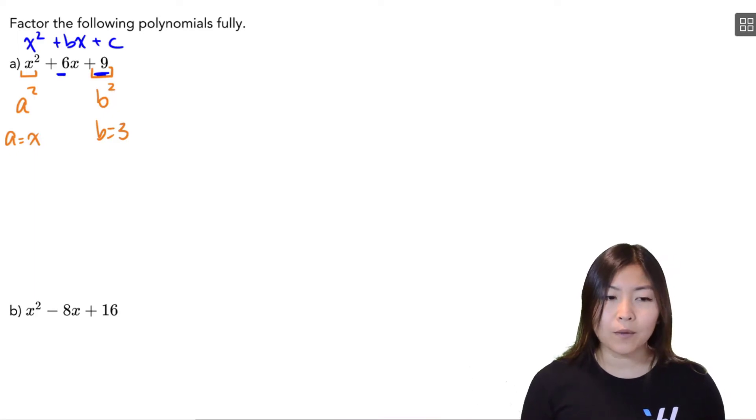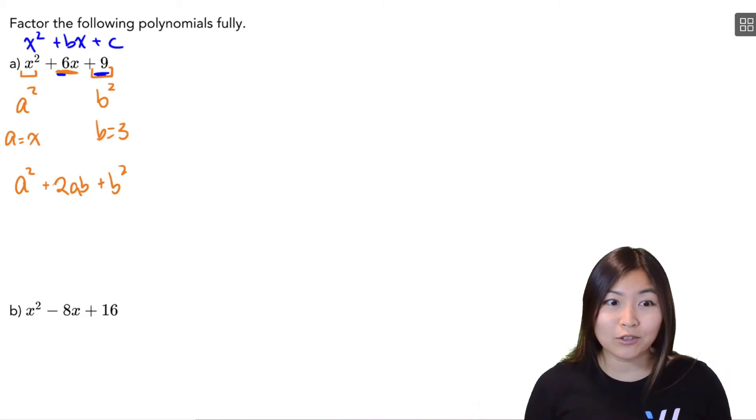Once I write it in this form, I notice that this is actually just a squared plus 2 times x times 3, which is your 6x, so that's 2ab, plus b squared. So instead of factoring this like a simple trinomial, we could recognize this as a perfect square trinomial.